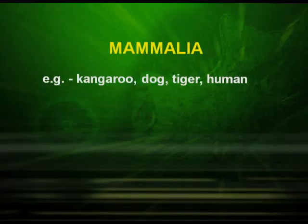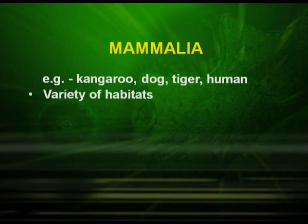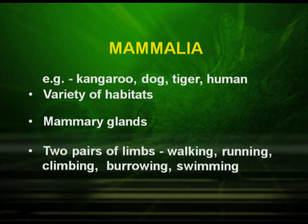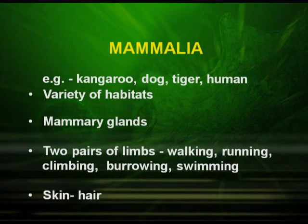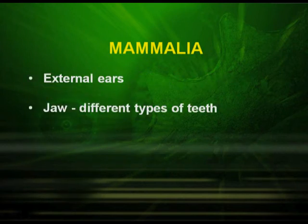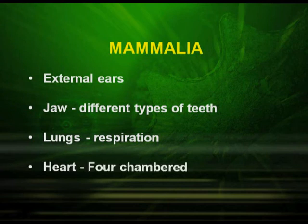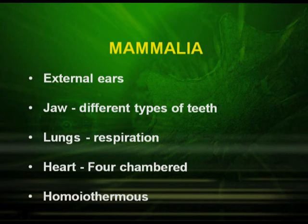Mammalia includes kangaroo, dog, tiger, and human beings. It has a variety of habitats. Presence of mammary glands is an important feature of Mammalia. They have two pairs of limbs meant for walking, running, climbing, burrowing, and swimming. Skin is covered by hairs and they have external ears. They have jaws with different types of teeth. Respiration is carried out by lungs, the heart is four-chambered, and they are warm-blooded animals.